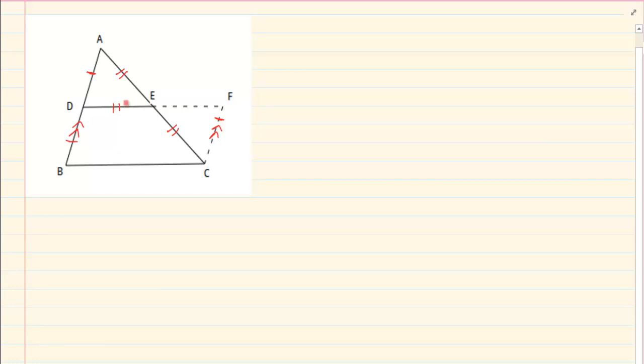We also know that DE is equal to EF. And remember once you prove congruency, you can immediately prove the opposite. Now if you look here, what do we have here? We have that one side is parallel and equal.